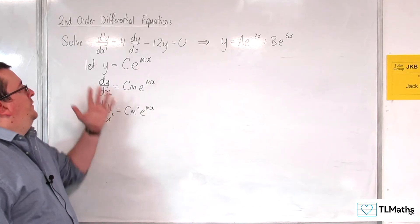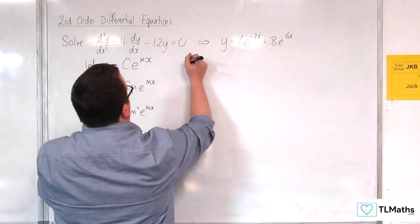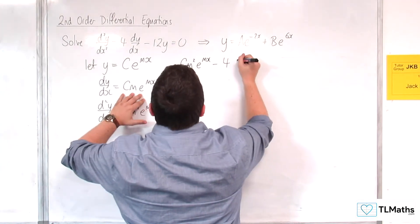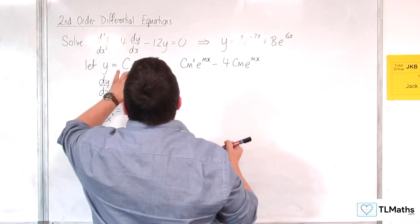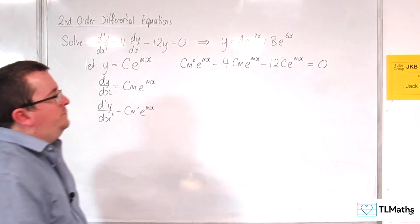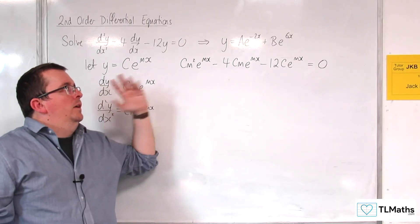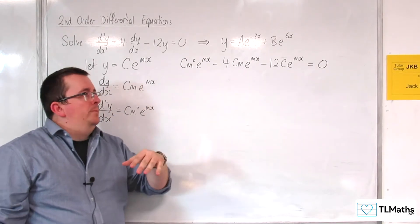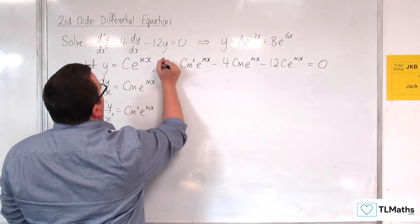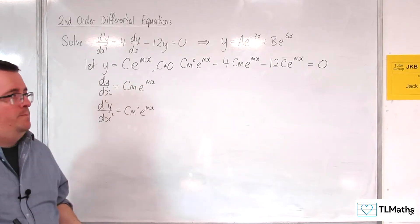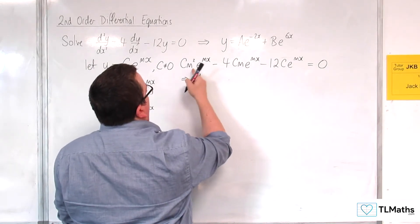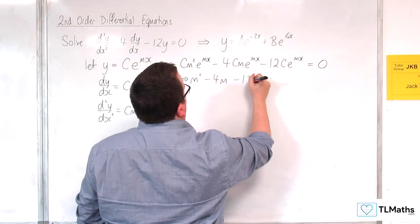If I substitute this into the differential equation, I'm going to get cm²e^(mx) - 4cme^(mx) - 12ce^(mx) = 0. Now e^(mx) is non-zero, so I'll be able to divide through by e^(mx). We've also got c in all of those terms. C will be a non-zero constant, so I can divide through by c. What would I be left with? I would be left with m² - 4m - 12 = 0.